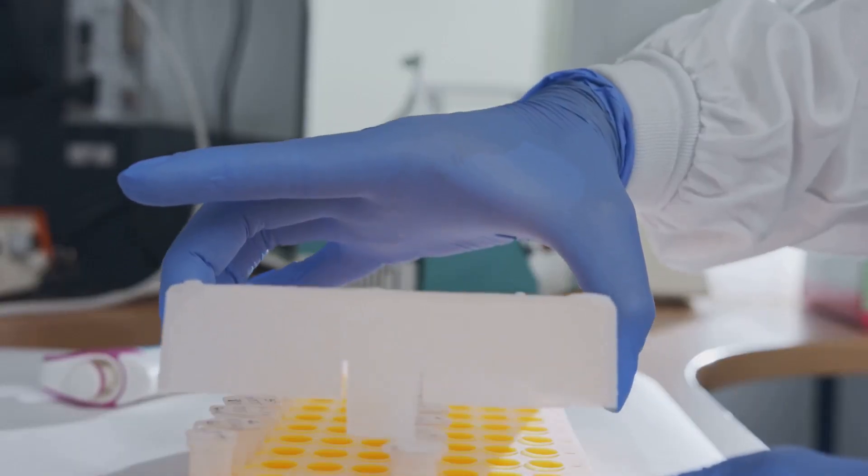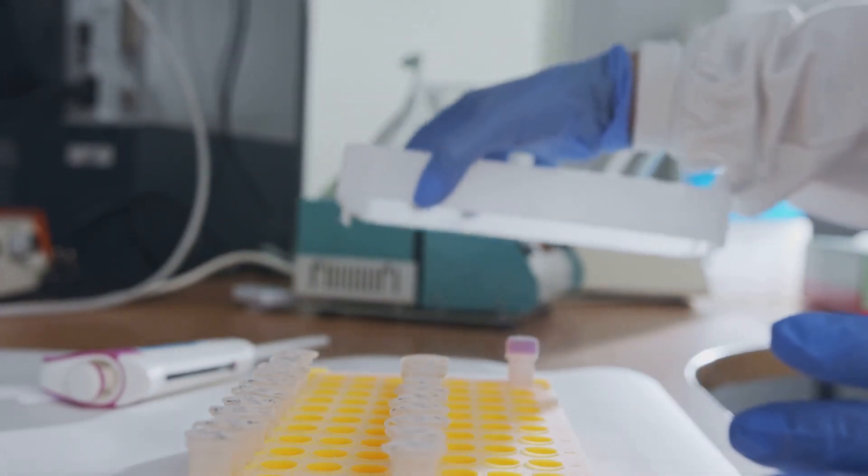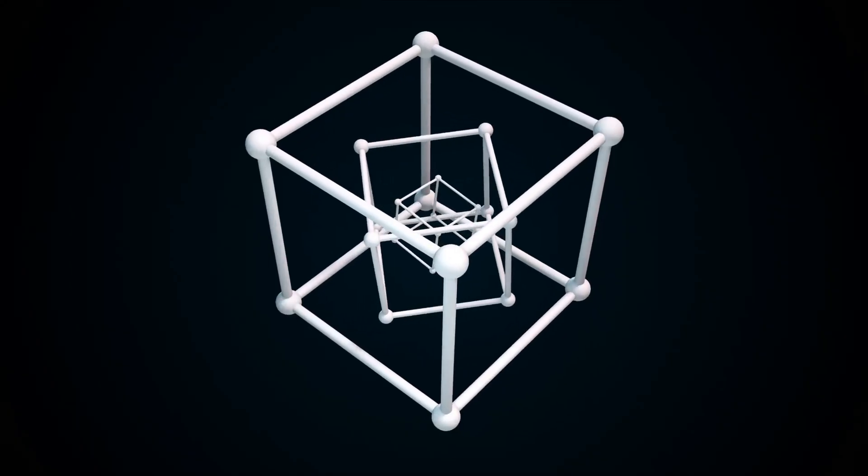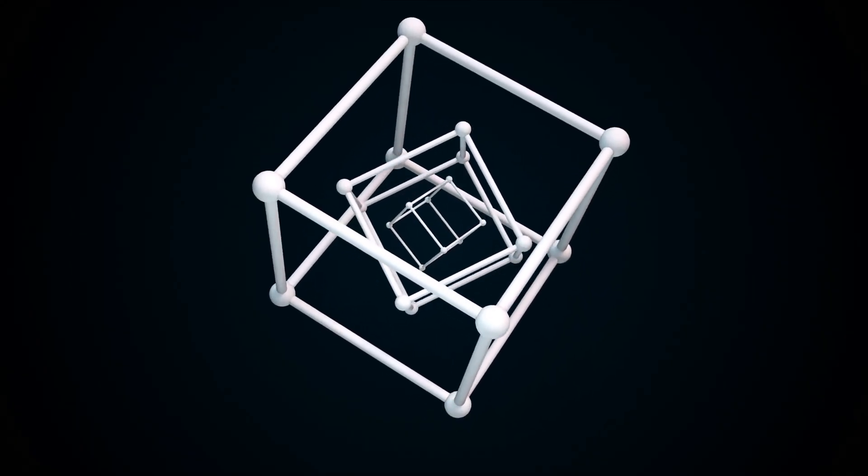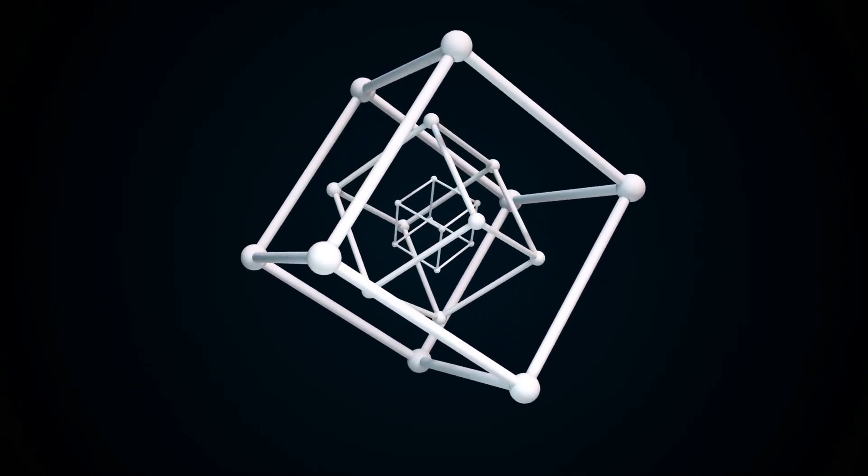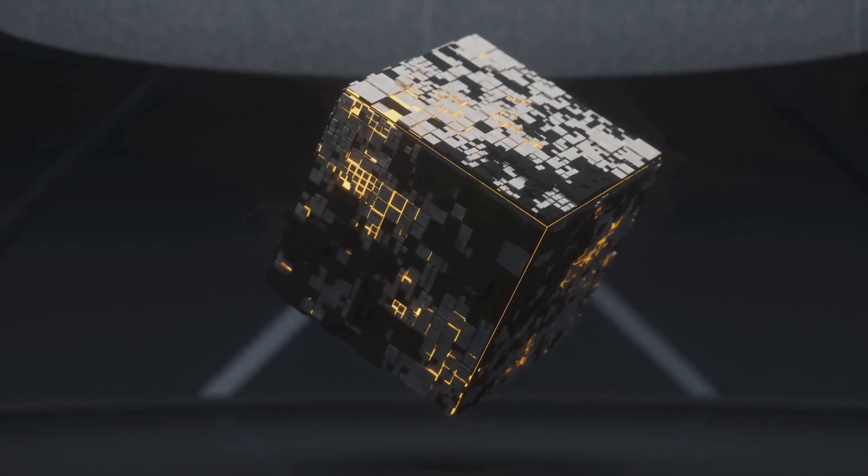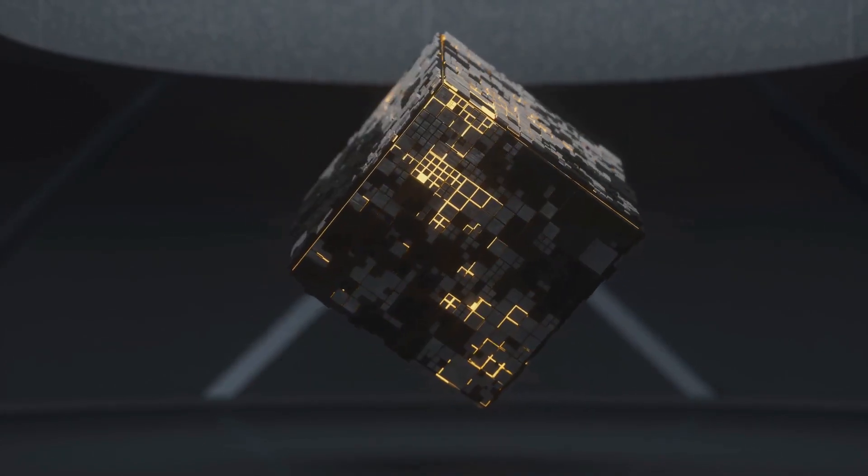Now let's delve into the fascinating world of superionic ice, particularly the newly discovered phase, Ice-19. This peculiar form of ice bears a unique structure known as a body-centered cubic structure. This structure is not just about the aesthetics though, it plays a crucial role in the way Ice-19 behaves, especially in terms of conductivity.